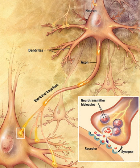These molecules then bind to neurotransmitter receptors on the postsynaptic cell side of the synaptic cleft. Finally, the neurotransmitters must be cleared from the synapse through one of several potential mechanisms, including enzymatic degradation or re-uptake by specific transporters either on the presynaptic cell or possibly by neuroglia, to terminate the action of the transmitter.